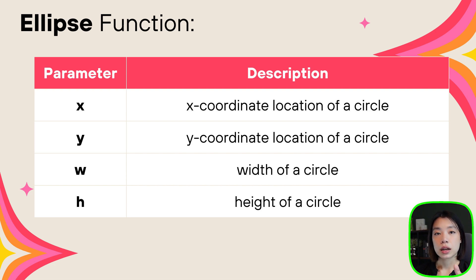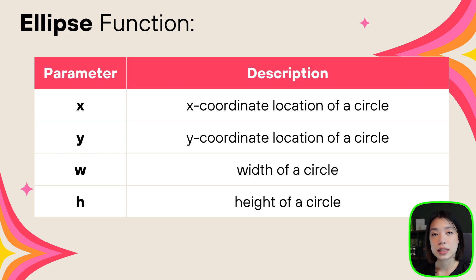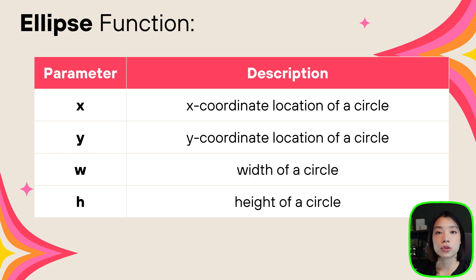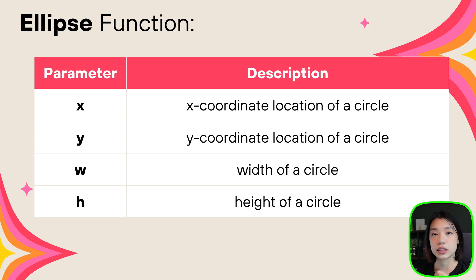So x and y are parameters that require you to put in arguments specifying the x and y coordinate of that circle, and w or h require you to put in numbers that set the size of the width and height. Once you provide those values, the function takes them in, sets them to specific variables within the commands underneath that function, or uses them to do some sort of calculation. By providing x, y, w, h values, you're able to draw circles of a specific size at a location x and y coordinate.